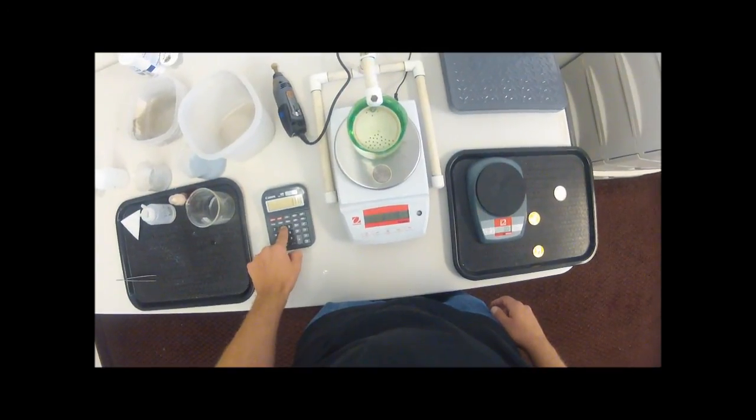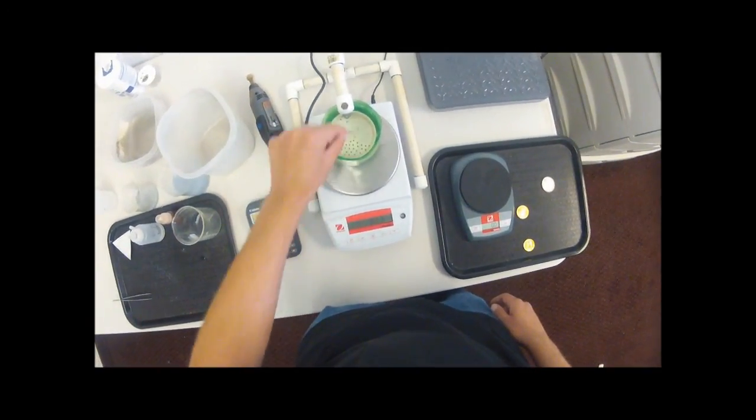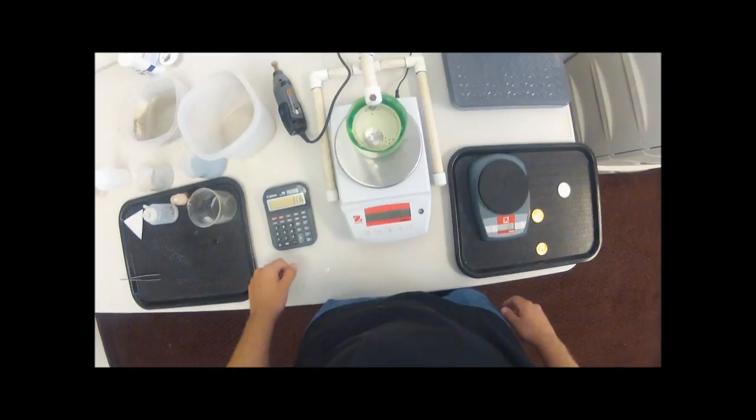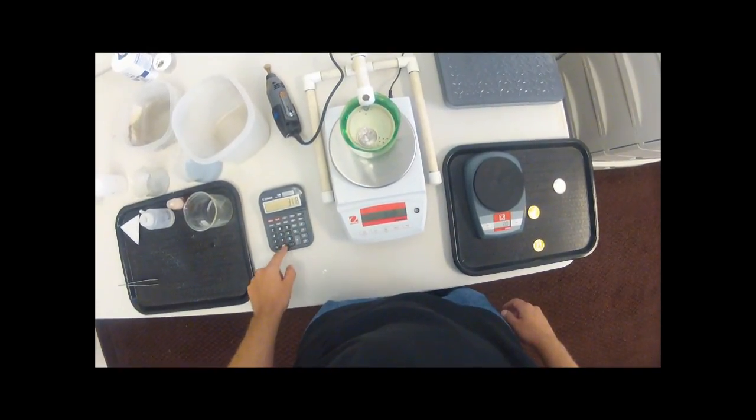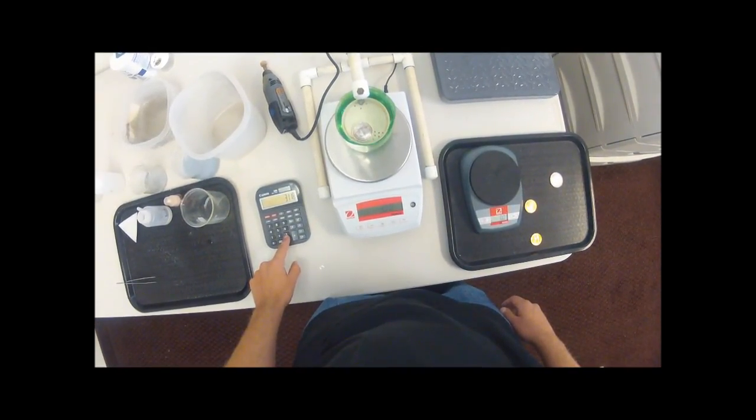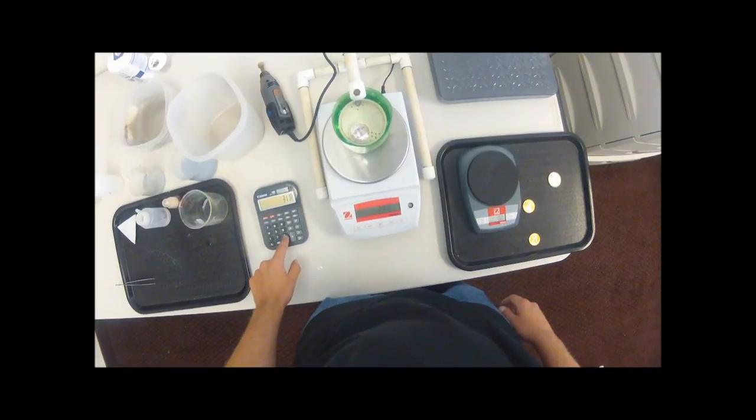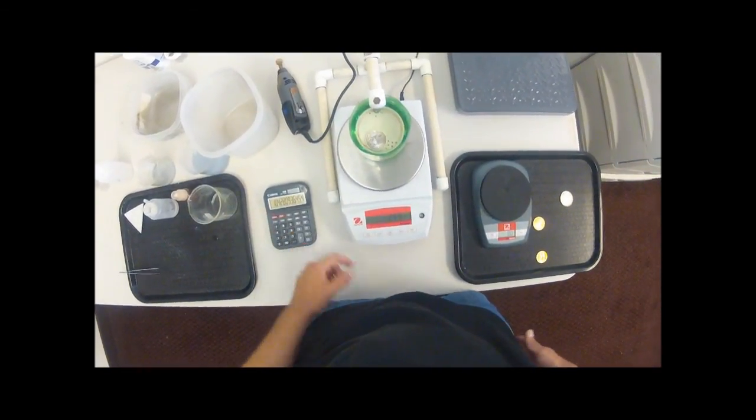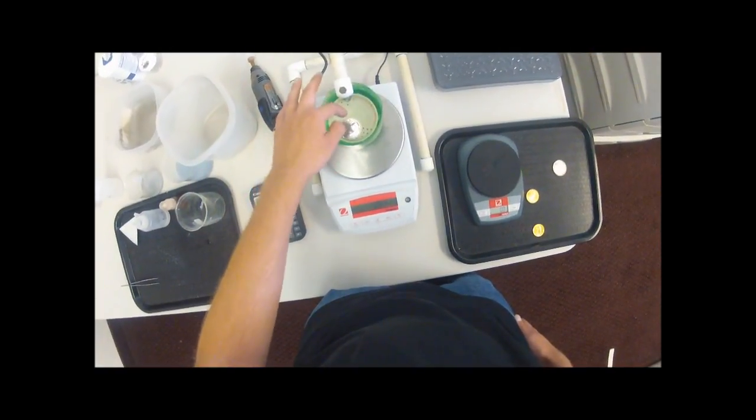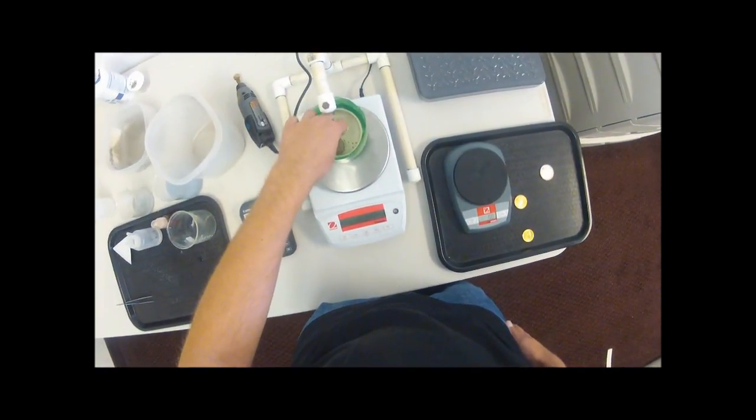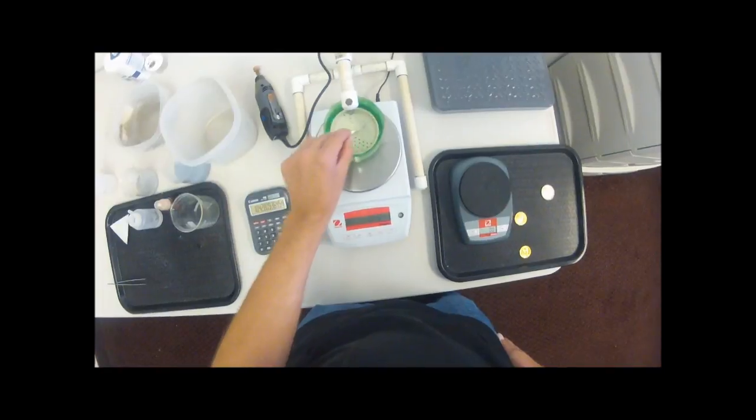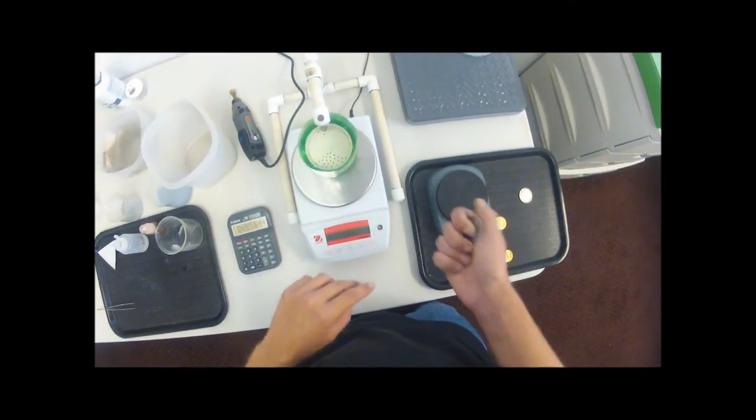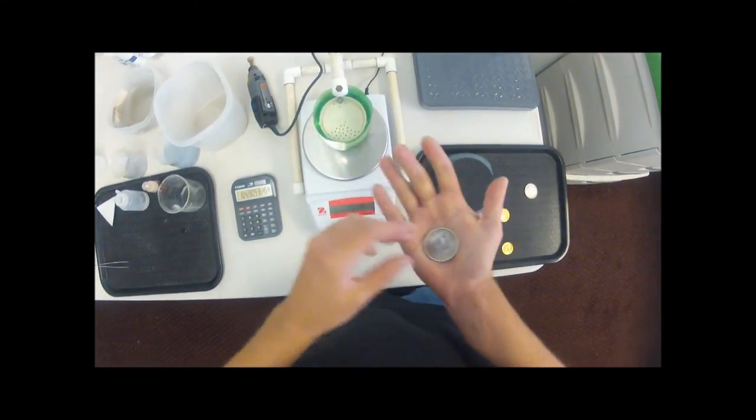That's 31.18, divided by 2.99. That gives us 10.42, which is pretty typical for rounds. Generally between 10.4 and 10.5, so we want to see 10.5 is the optimal number to see.